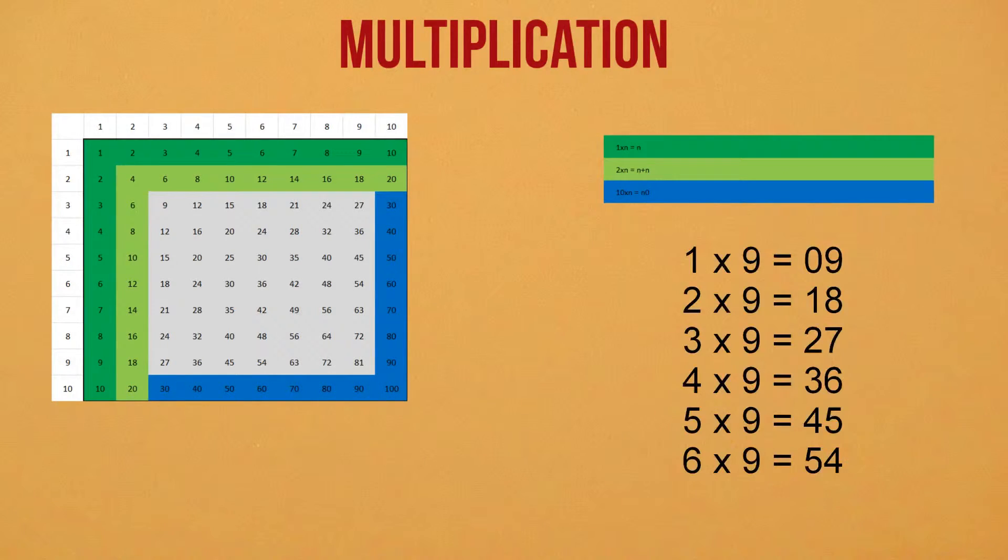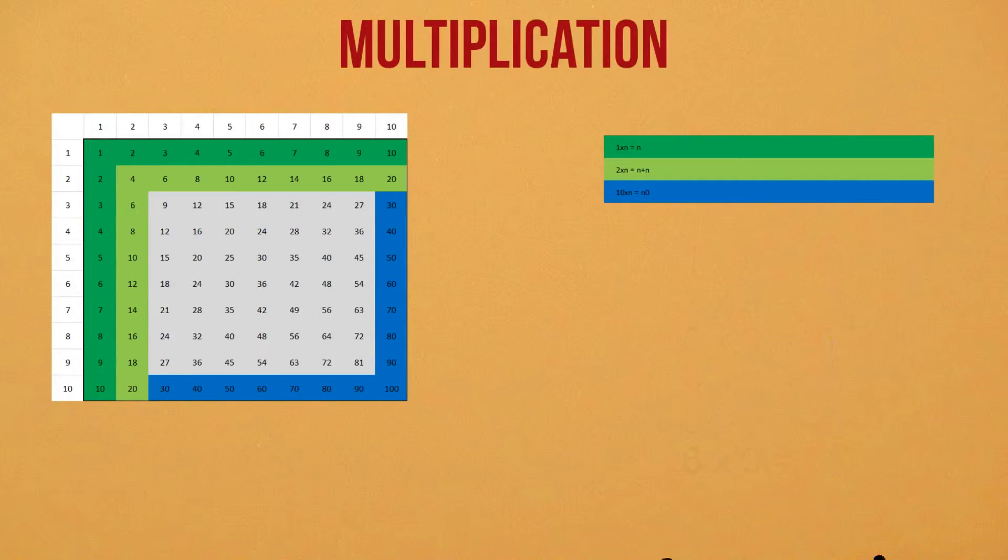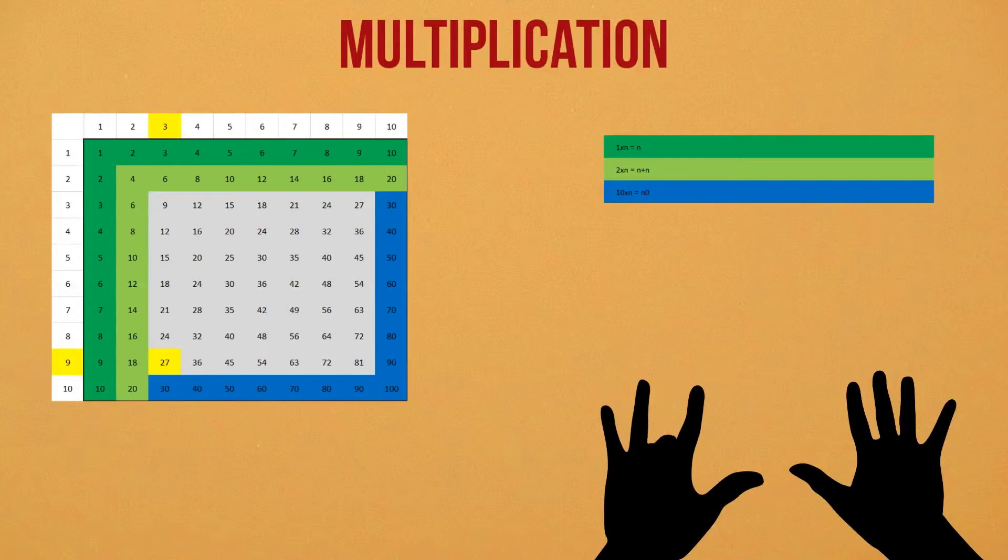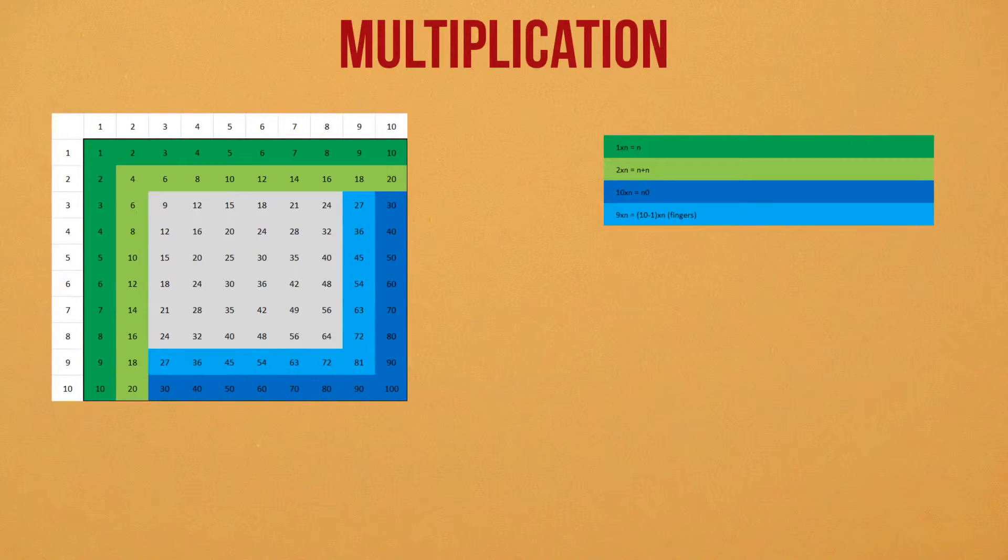When you multiply something by 9, you're really just multiplying by 10 minus 1, right? So as you make bigger and bigger products of 9, the 10s place keeps going up by 1, and the 1s place keeps going down by 1. It just so happens that you can keep track of this in your hands. If you want to do 9 times 3, put down your 3rd finger. You have 2 fingers to the left, so your 10s place is a 2. You have 7 fingers on the right, so the 1s place is a 7. So 9 times 3 is 27. My sister taught me how to do this when I was in 3rd grade, and I still do products of 9 this way.